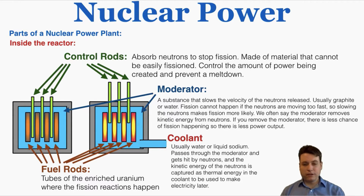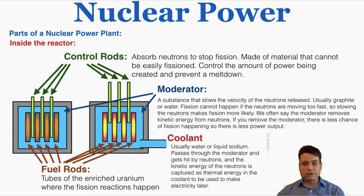The coolant in the station is usually water or liquid sodium. It passes through the moderator and gets hit by the neutrons, and the kinetic energy of the neutrons is captured as thermal energy in the coolant to be used to make electricity later. The coolant captures all the heat being created by these reactions and takes it somewhere else.